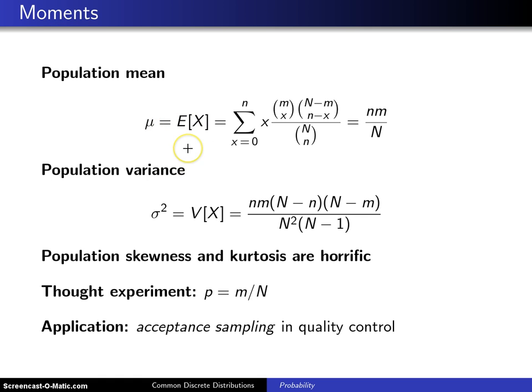Because the hypergeometric distribution is a discrete distribution, you have a summation here rather than an integral, and that summation will run over the support from x equals 0 up to n of x times f of x, where f of x is the probability mass function for the hypergeometric distribution.